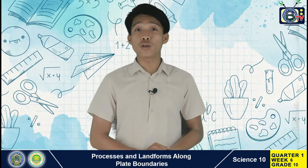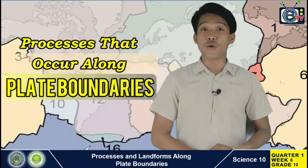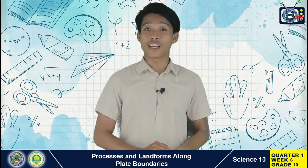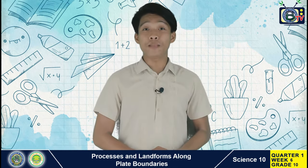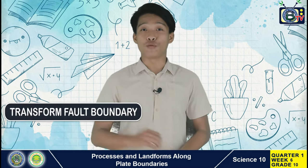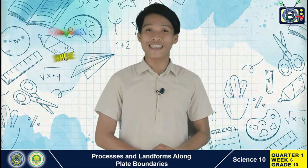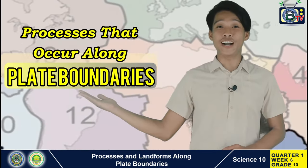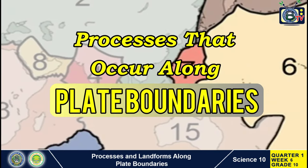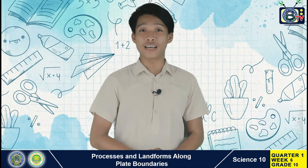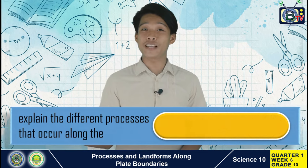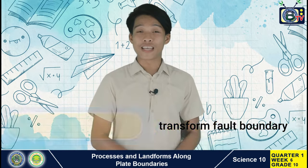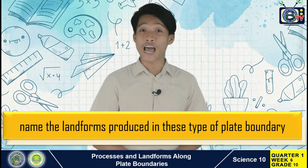This lesson is a continuation of the previous one, which deals with the processes that occur along plate boundaries. In this lesson, we will study thoroughly the different processes taking place at a divergent plate boundary and transform-fault plate boundary — where and why they take place, and their effects. We are expecting that after this lesson you will be able to: first, explain the different processes that occur along divergent plate boundary and transform-fault boundary; and second, name the landforms produced at these types of plate boundaries.